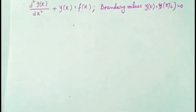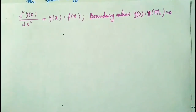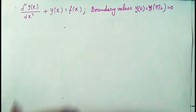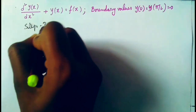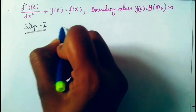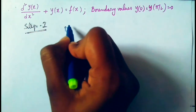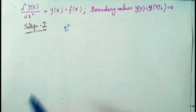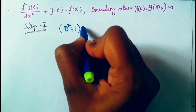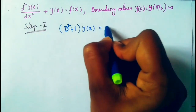Now take the boundary value problem from CSIR NET June 2018. Step one: take the differential equation and find its general solution. This can be written as (D² + 1)·y(x) = f(x).